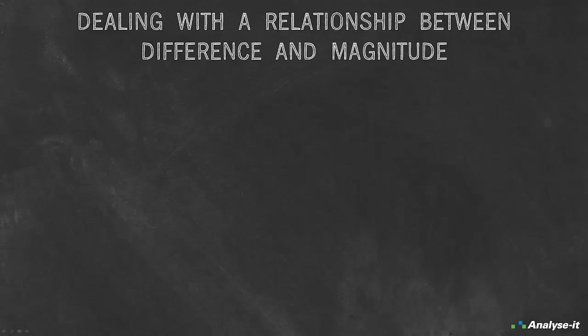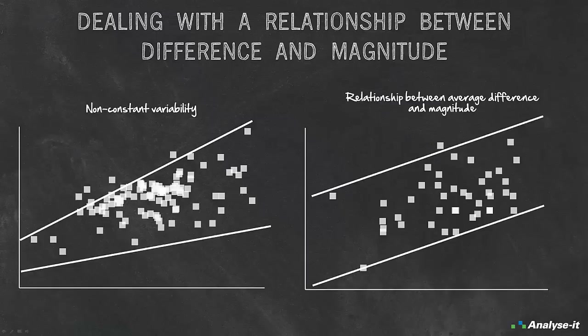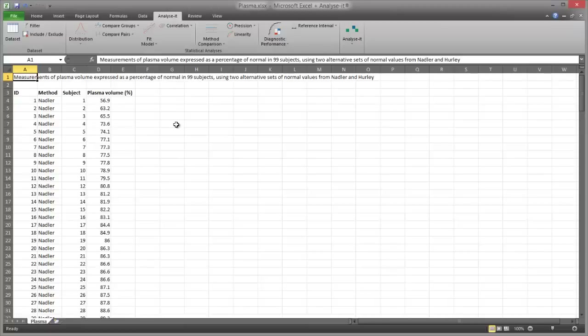Next let's look at dealing with a relationship between difference and magnitude of measurement. The difference plot may sometimes suggest a relationship between the differences and magnitude. The band of points may start narrow and widen to the right as magnitude increases, indicating that variability of the differences increases with magnitude. Sometimes the band may not be horizontal, indicating a relationship between average difference and magnitude. To illustrate, we're going to use an example from Bland-Altman's 1999 paper measuring plasma volume expressed as a percentage of normal using two alternative sets of normal values from Nadler and Hurley.